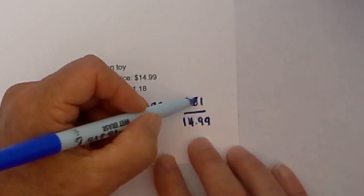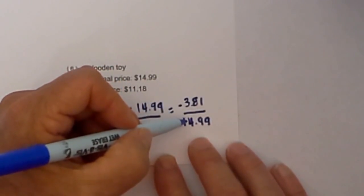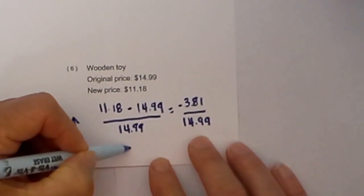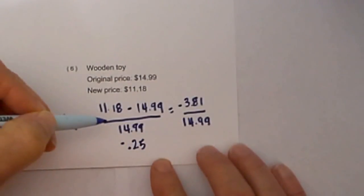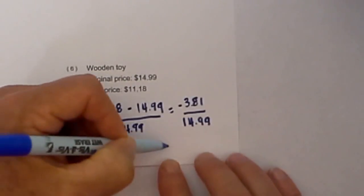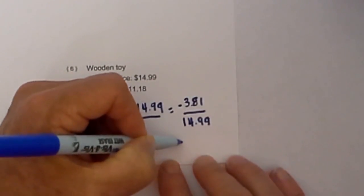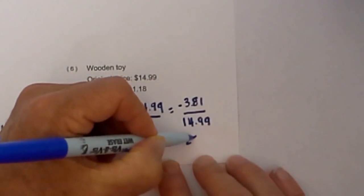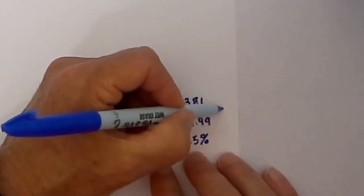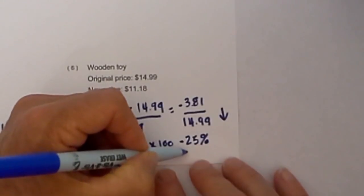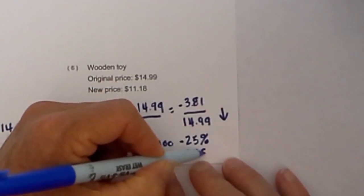When you divide 3.81 by 14.99, you get negative 0.25. Multiply that by 100, and that's negative 25%, so you get a percent decrease of 25%.